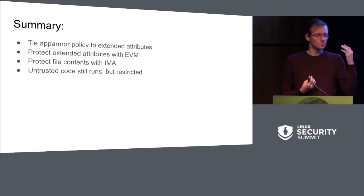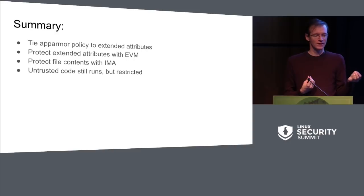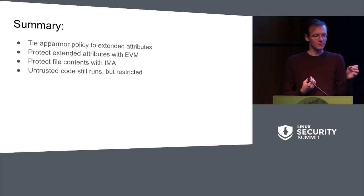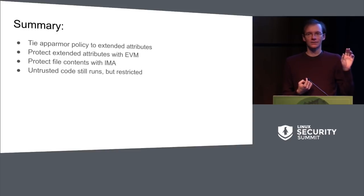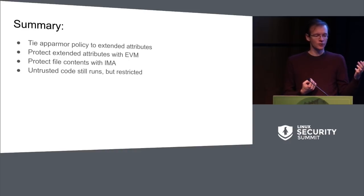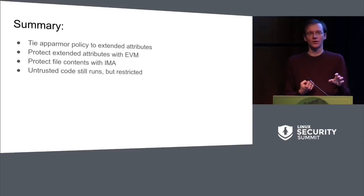The summary: we're able to tie the AppArmor context a process runs in to the content or presence of an extended attribute. We can protect that extended attribute with EVM and protect the file content with IMA. We trigger appraisal only for processes running in the privileged context. Untrusted code still runs, but in an untrusted context — not appraised, and without access to the same set of sensitive material.